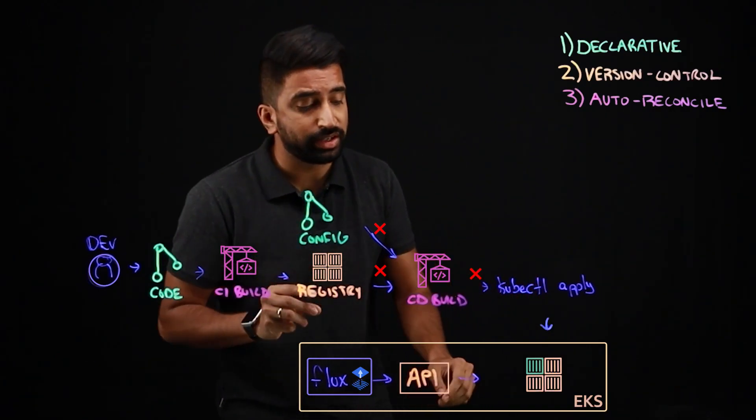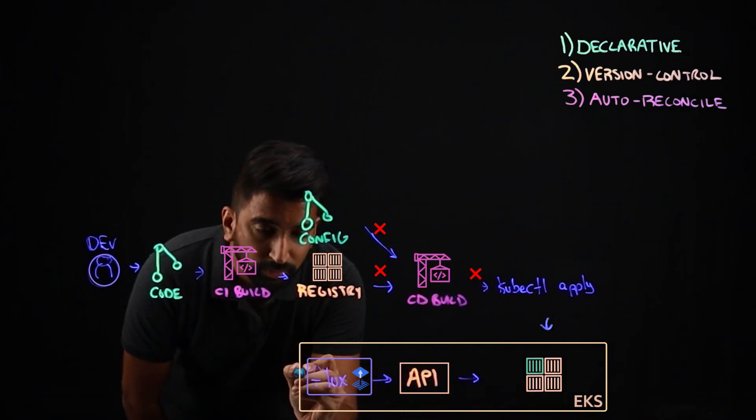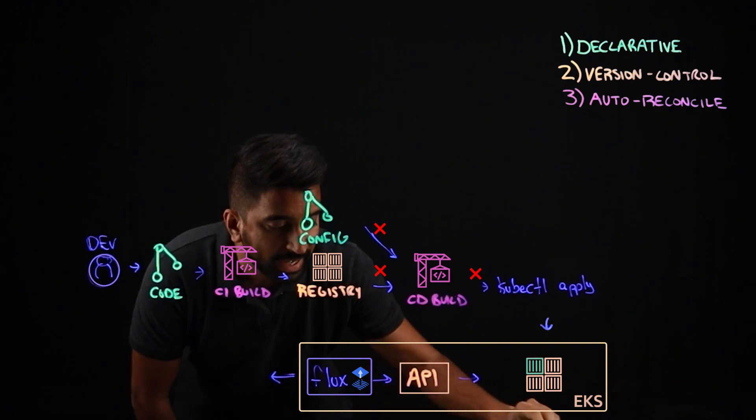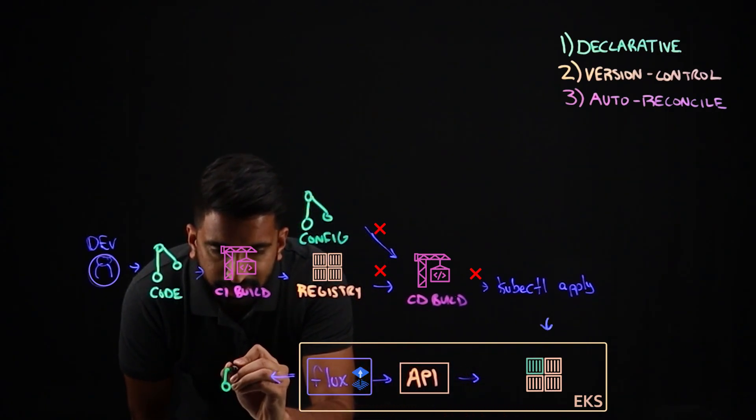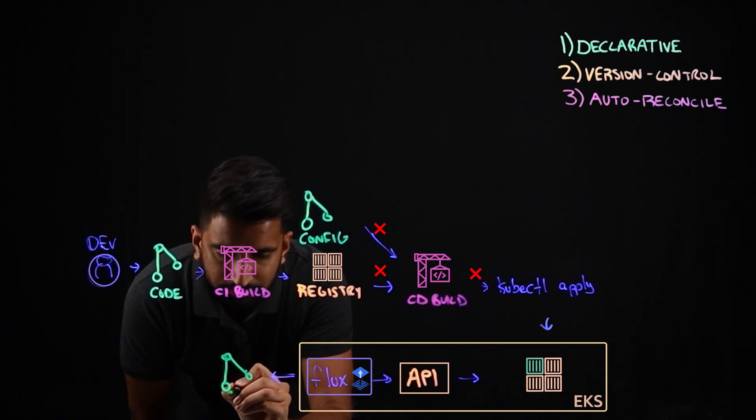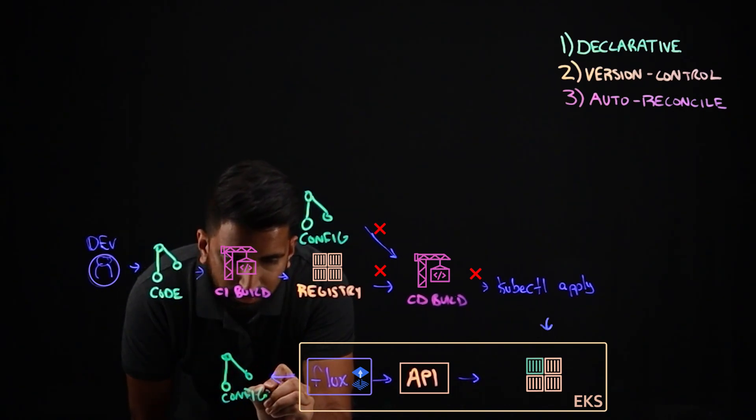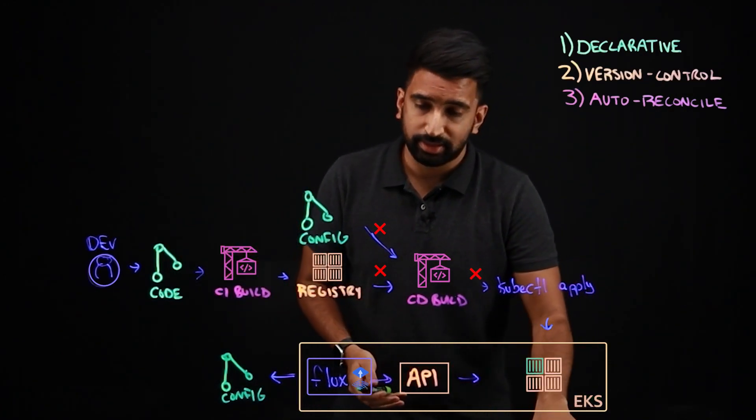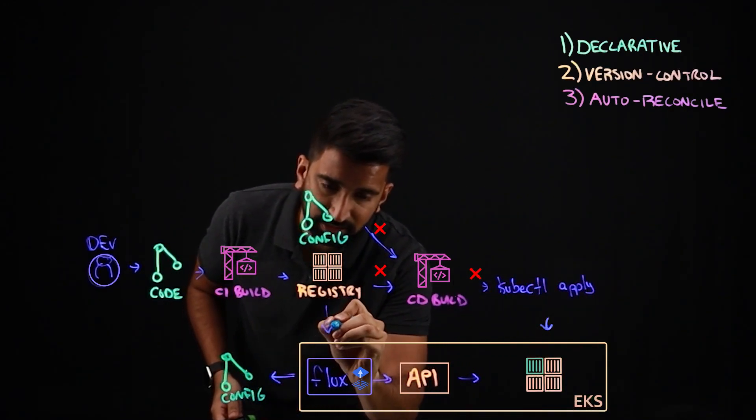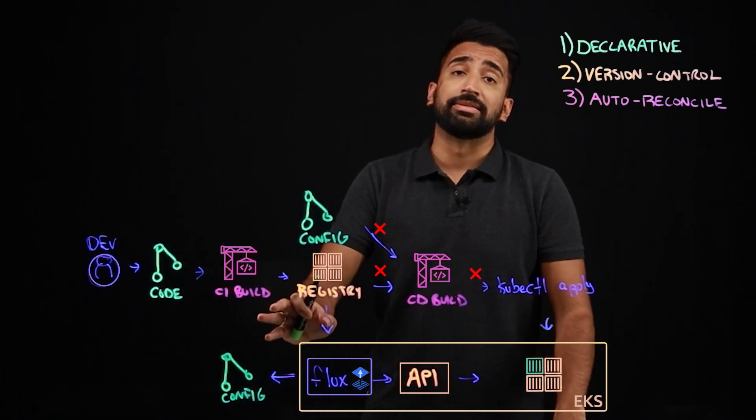But critically, what it's also going to do is record that back in the configuration repo. Let me just draw that again down here. So essentially, what it's doing is registering the state of that latest push that's come in through the registry to Flux, and it's putting that in the config.